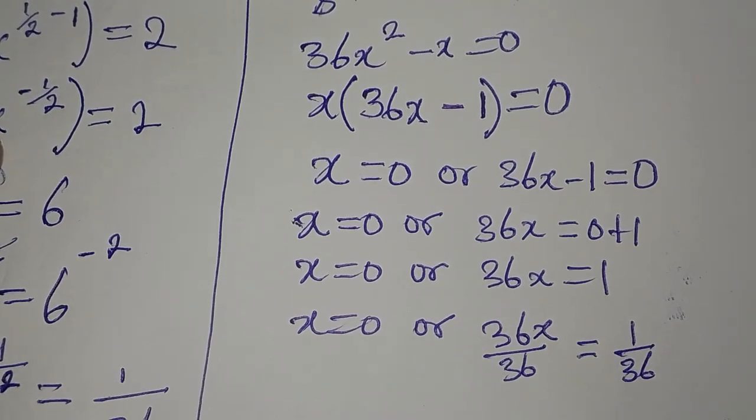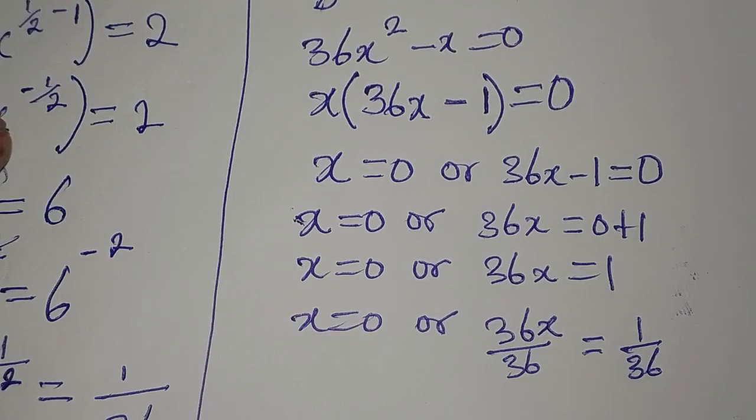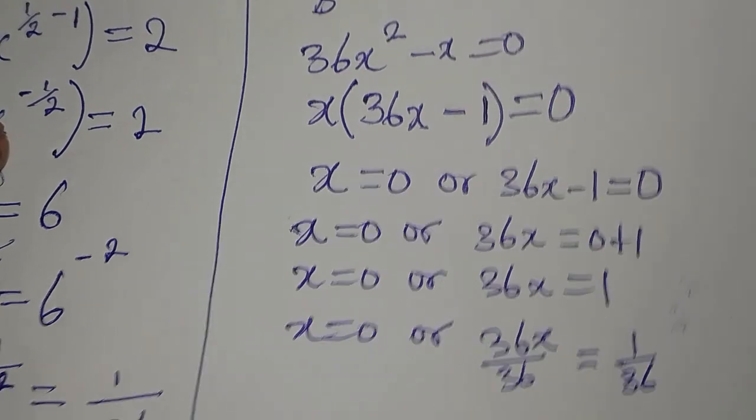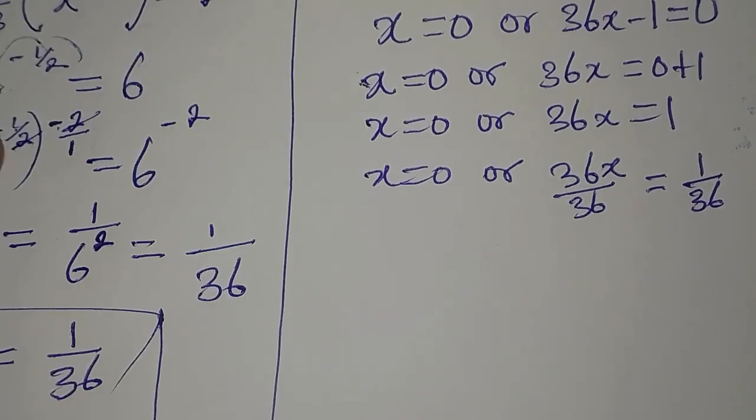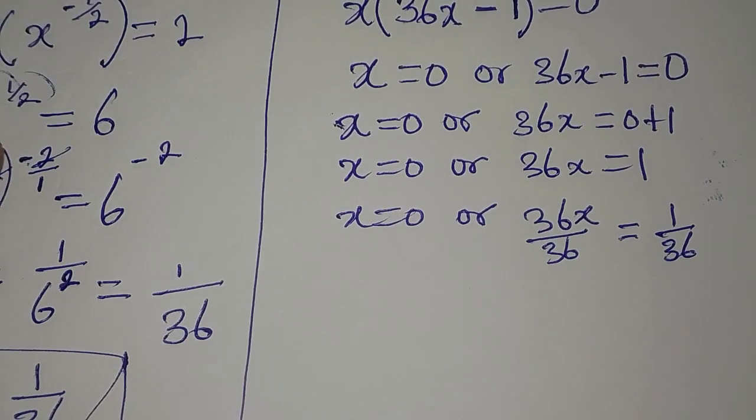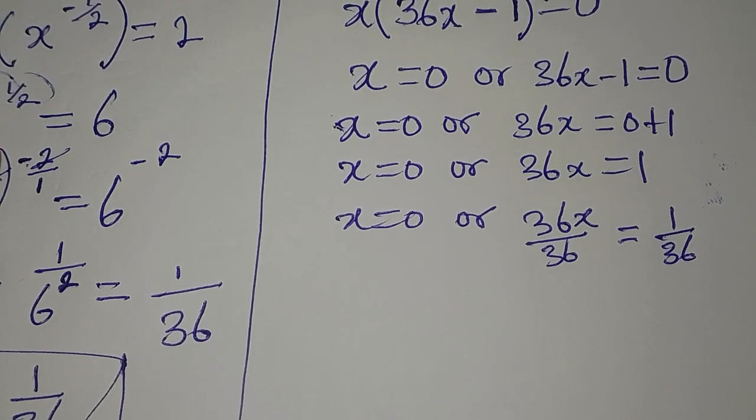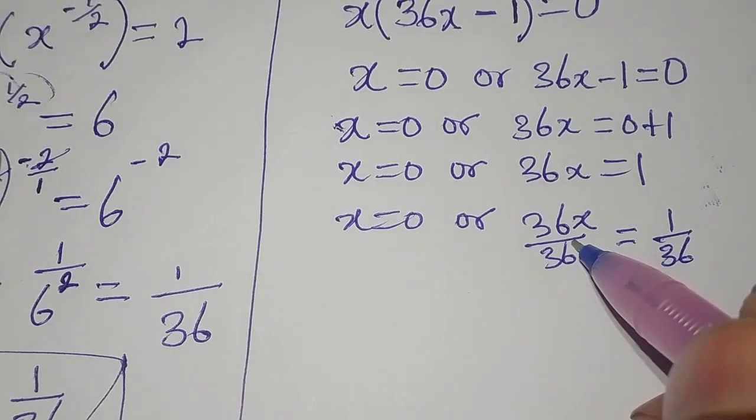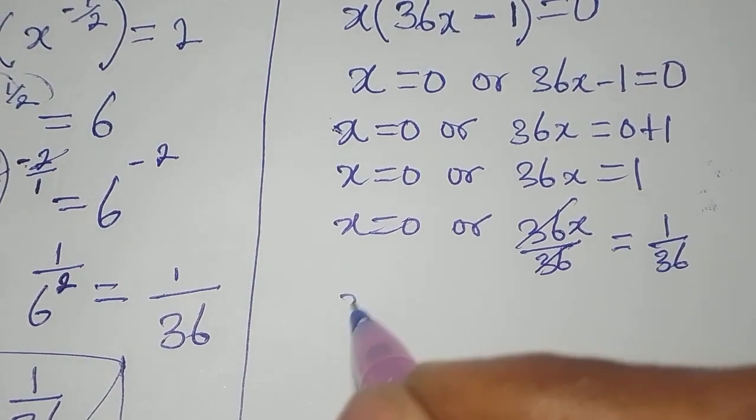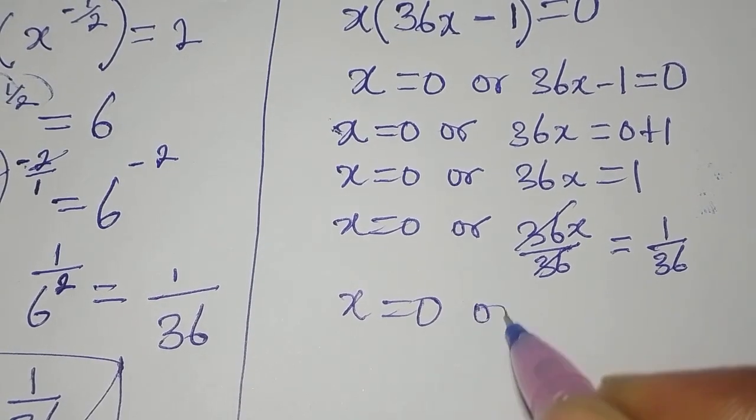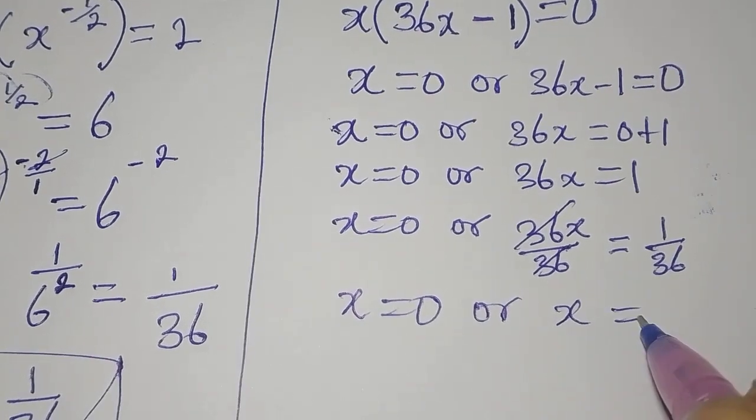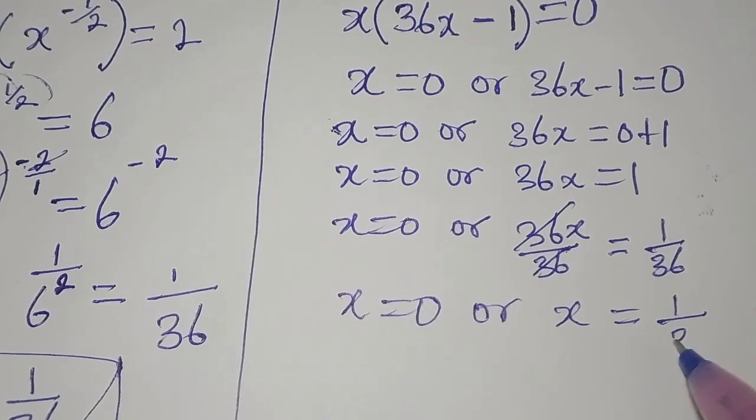I am dividing both sides by the coefficient of x, which is 36. Then, another thing to do is the cancellation. So our x equals 0, or x from here equals 1/36.